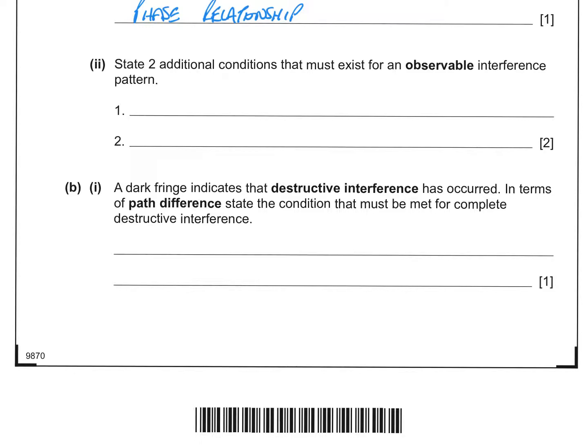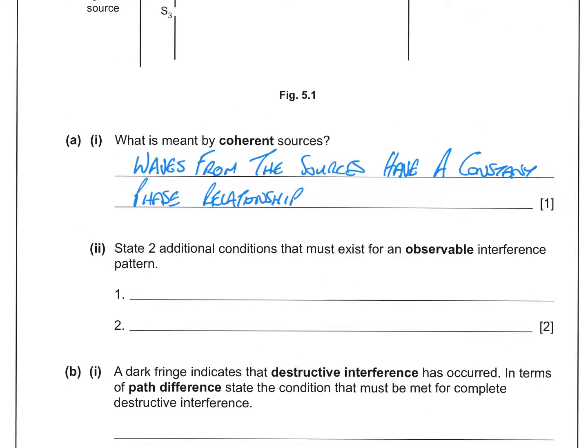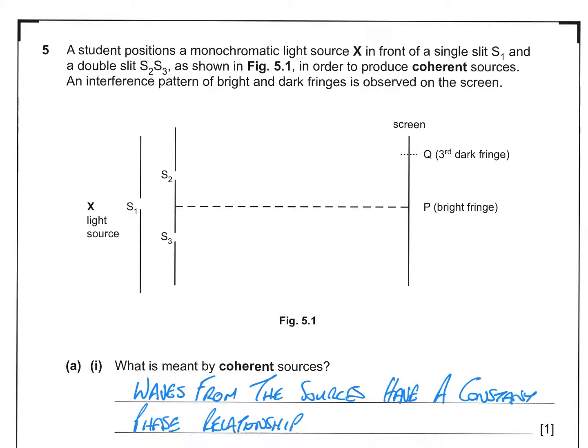And in the setup above, that would mean that these slits would have to be similar thicknesses, so that one doesn't produce stronger waves than the other. So similar amplitudes. And in order to see an interference pattern, you would need to be able to see the contrast between the bright bits and the dark bits. So having your room darkened so that you can see the difference would also be important.